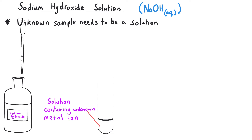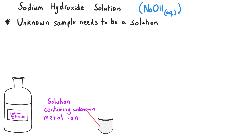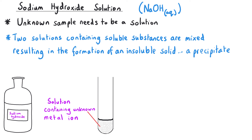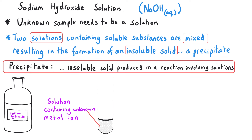When we add sodium hydroxide solution to a solution of our unknown metal ion, we get what's called a precipitation reaction occurring. A precipitation reaction occurs when two solutions containing soluble substances are mixed together, resulting in the formation of an insoluble solid — this is what we call the precipitate. This solid appears as a cloudy or grainy substance in the liquid that will settle at the bottom of the tube over time.